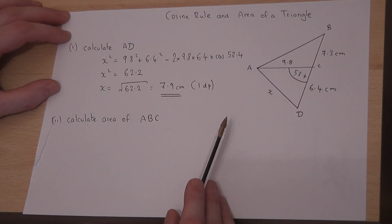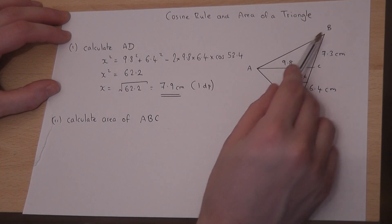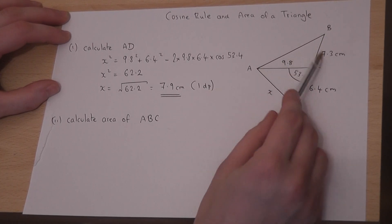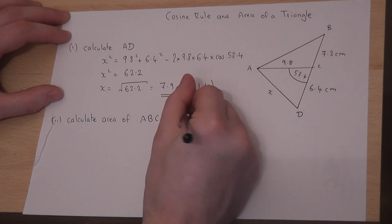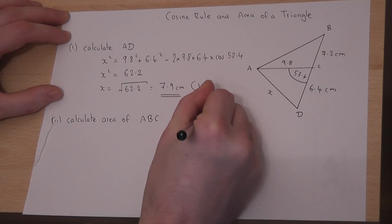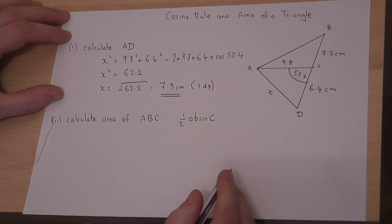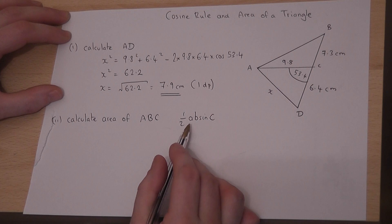Part two asks for the area of triangle ABC. If we know two sides and a contained angle S-A-S, then we can find the area using the formula half AB sine C. That is a general formula for the area of a triangle.